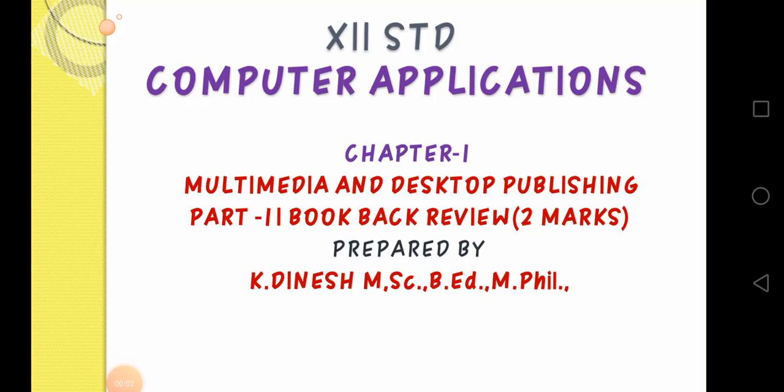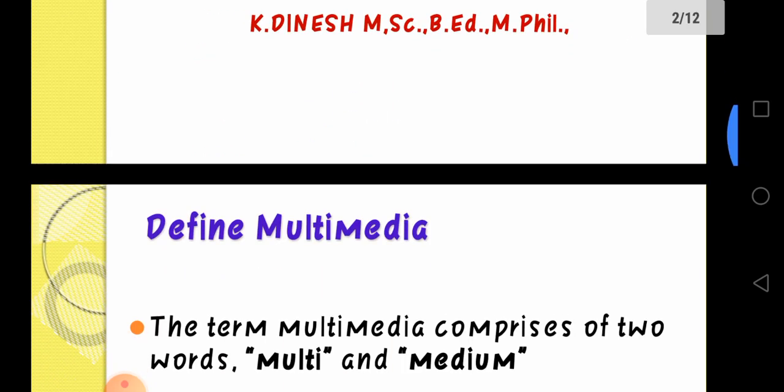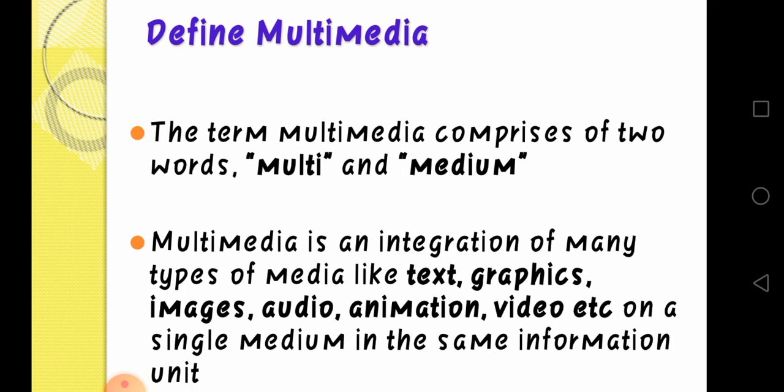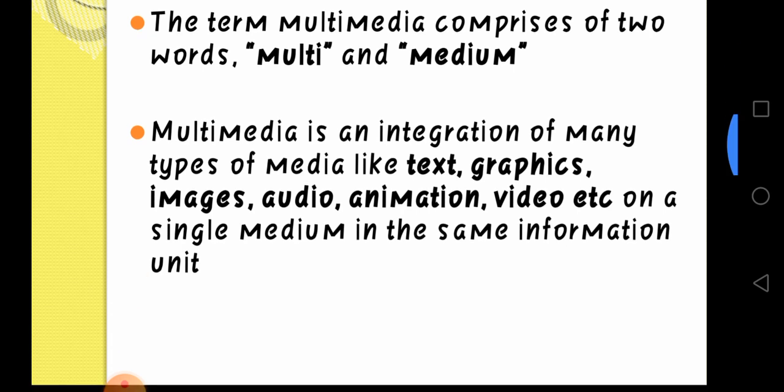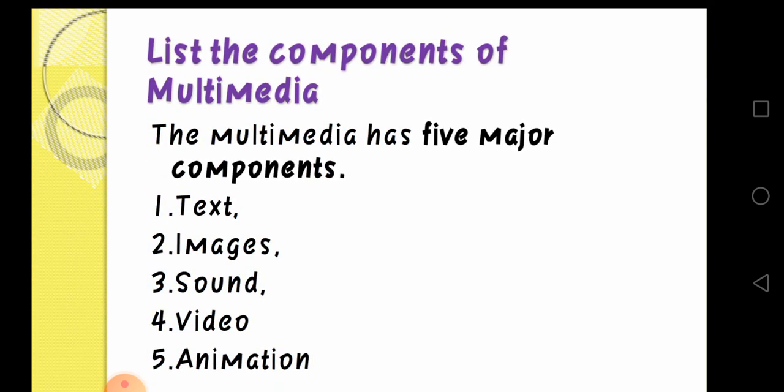Hi students, today we are going to see Chapter 1: Multimedia and Desktop Publishing, Part 2, book pack questions. Define multimedia. In your textbooks they are containing two definitions, you can choose any one. The term multimedia comprises of two words: multi and medium. Multimedia is an integration of many types of media like text, graphics, images, audio, animation, video, etc. in a single medium, in the same information unit.